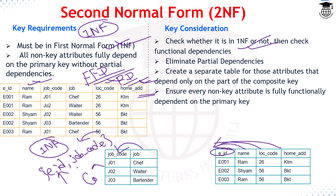Since we need to decompose the table to eliminate partial dependency, we split the original table. One table contains EID, name, location code, and home address, and another table contains job code and job. This decomposition removes the partial dependency while preserving all the data.